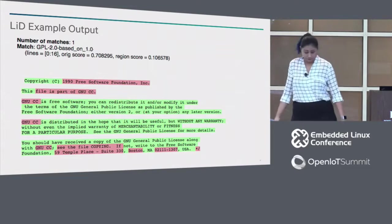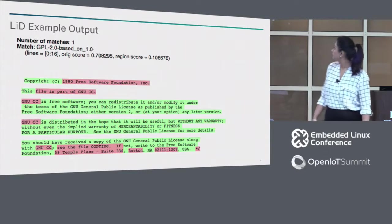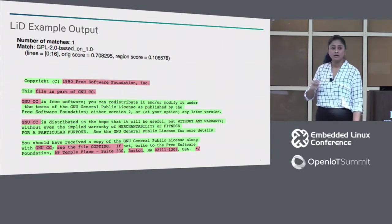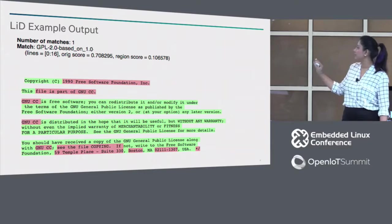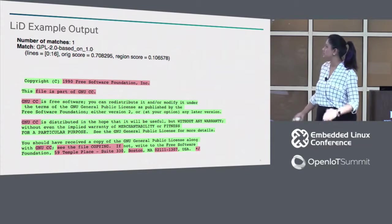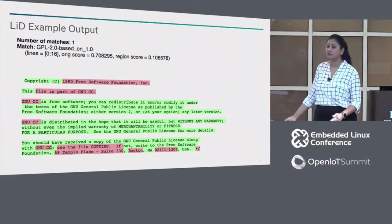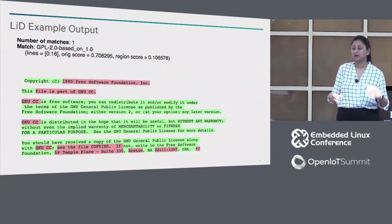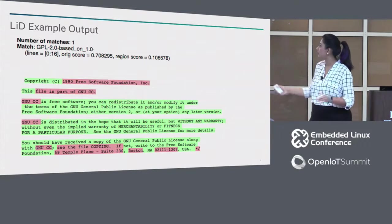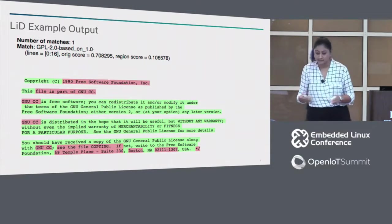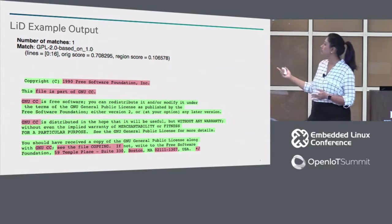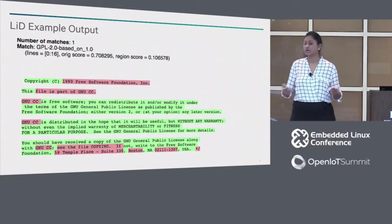Here's an example output of how LID represents hits in a file. Green regions are where it sticks to the template and red are deviations from the template. In this case the match says it's a GPL 2.0 based on a custom template — not a standard template found on SPDX. It shows what lines it caught it in, the original score which is the similarity measure, and the region score which is the result from the Levenshtein distance.